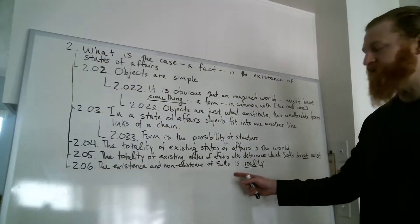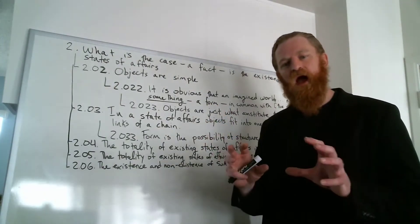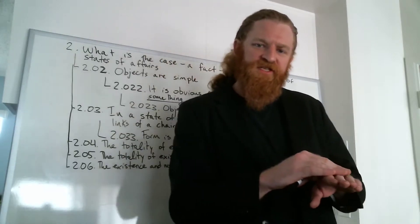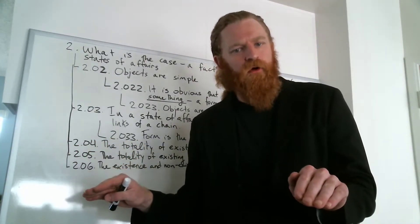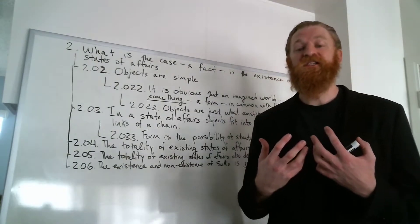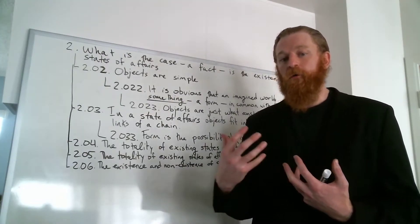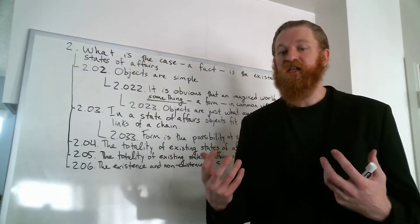2.06: The existence and non-existence of states of affairs is reality. So world and reality are two separate things here, because remember the substance of reality traverses both the actual world and the possible worlds. The world is composed of existing states of affairs, but objects have the potential to recombine into other configurations.